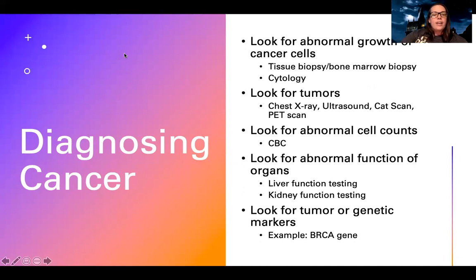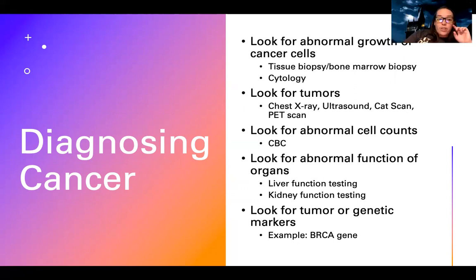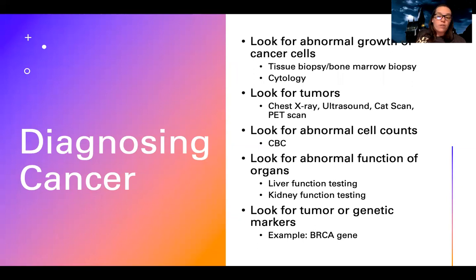We diagnose cancer by looking for abnormal growth or cancer cells. Wherever we suspect cancer, we do a biopsy — tissue, bone marrow, or cytology to look at cell differentiation. We can also visualize tumors on a chest X-ray, ultrasound, CT scan, or PET scan. We look for abnormal organ function — like liver or kidney function testing. We can also run labs to look for tumor or genetic markers, such as the BRCA gene for breast cancer.